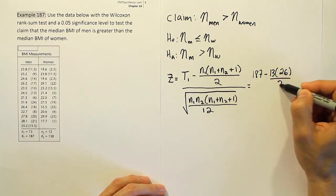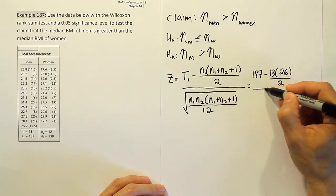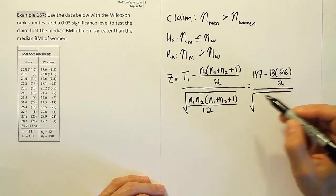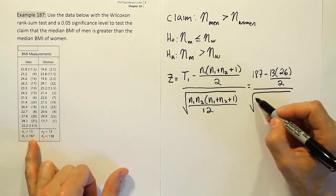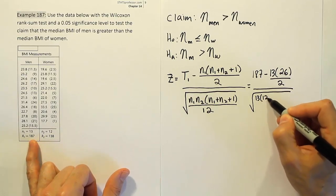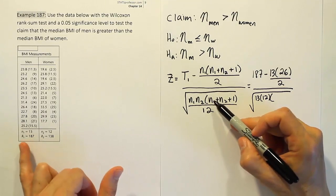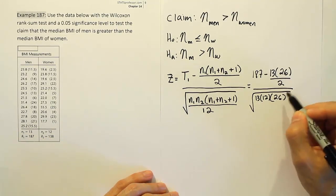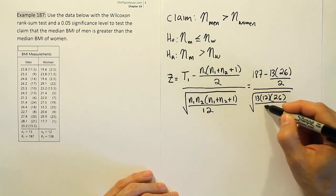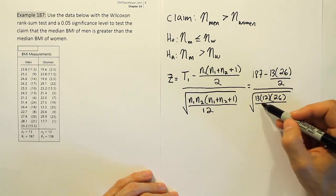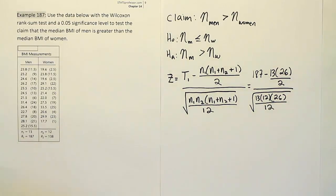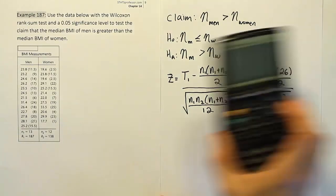And then from there we have a fraction bar and we'll have the square root of... Now again it would be 13 for N1 times 12 for N2 times 13 plus 12 plus 1 which again is 26. And we'll divide all that by 12. So you can see that these would cancel out. That will go into that 13 times so we can do the arithmetic in our calculator a little bit faster.